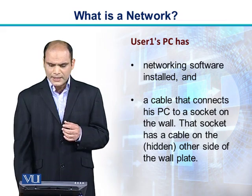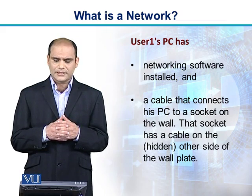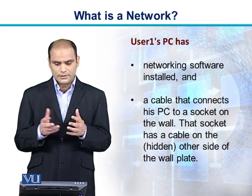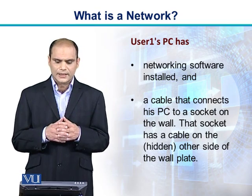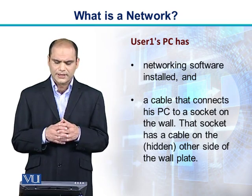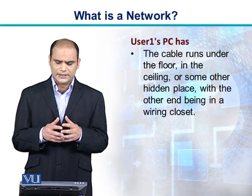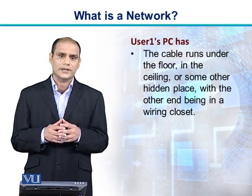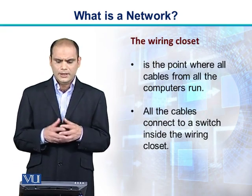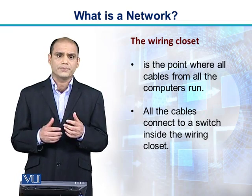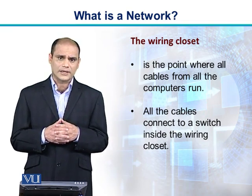User 1's PC must have some kind of networking software installed on it. Furthermore, User 1's PC should have a cable that connects his PC to the socket on the wall. That socket has a cable on the other hidden side of the wall. The cable may run under the floor, in the ceiling, or some other hidden place, with the other end being in the wiring closet — the point where all the cables from the computers run.